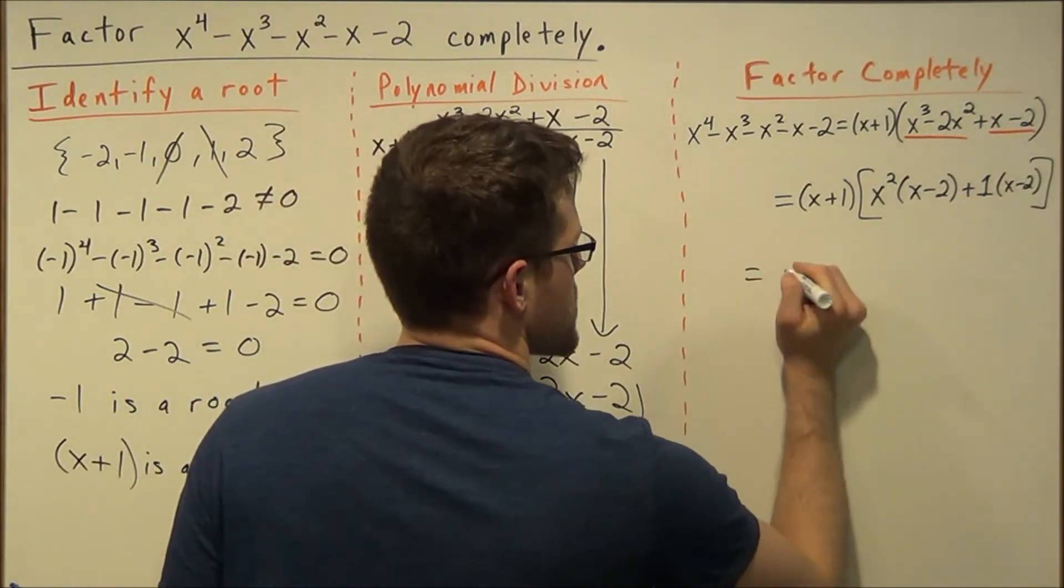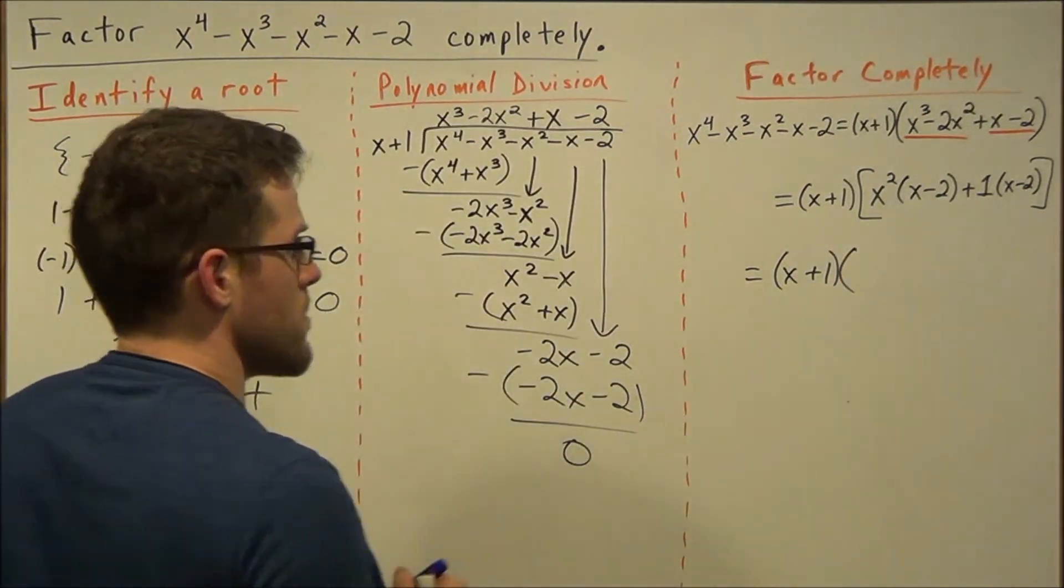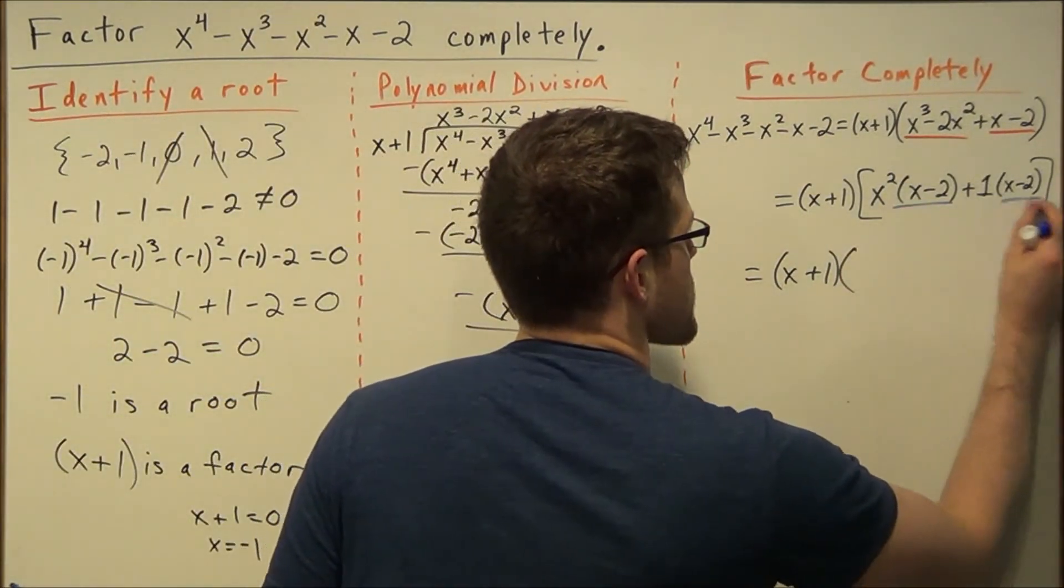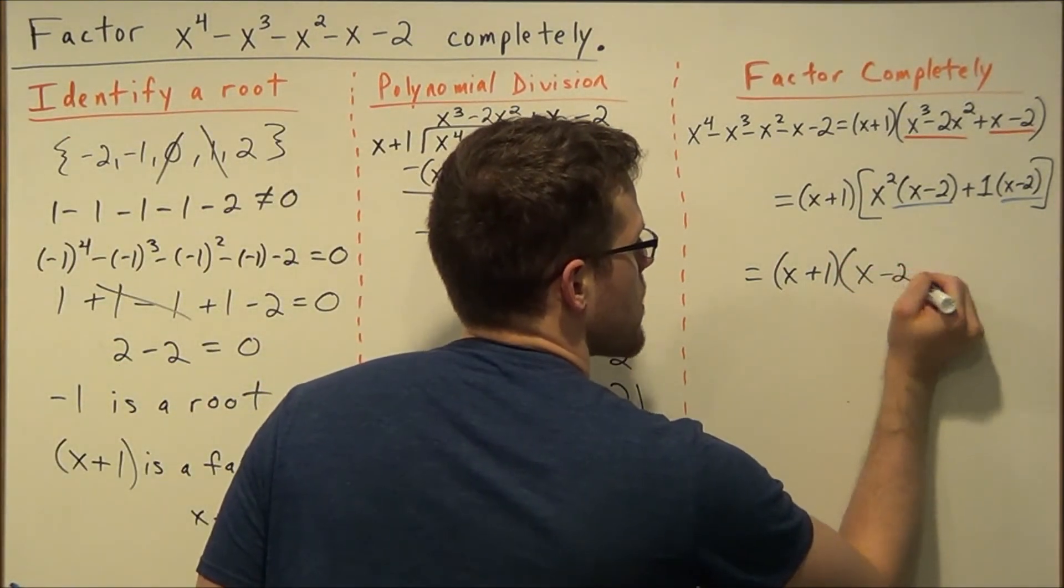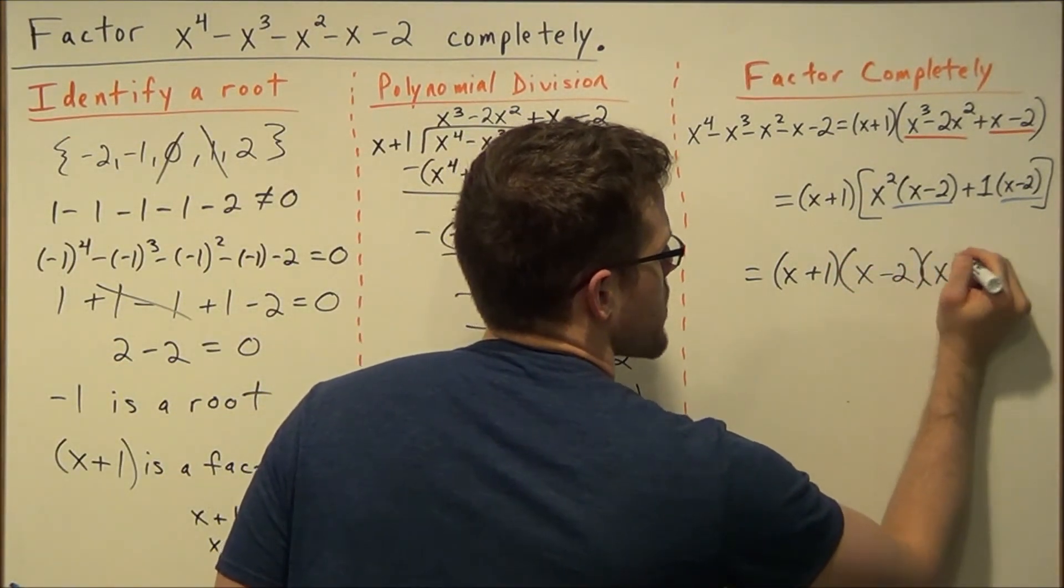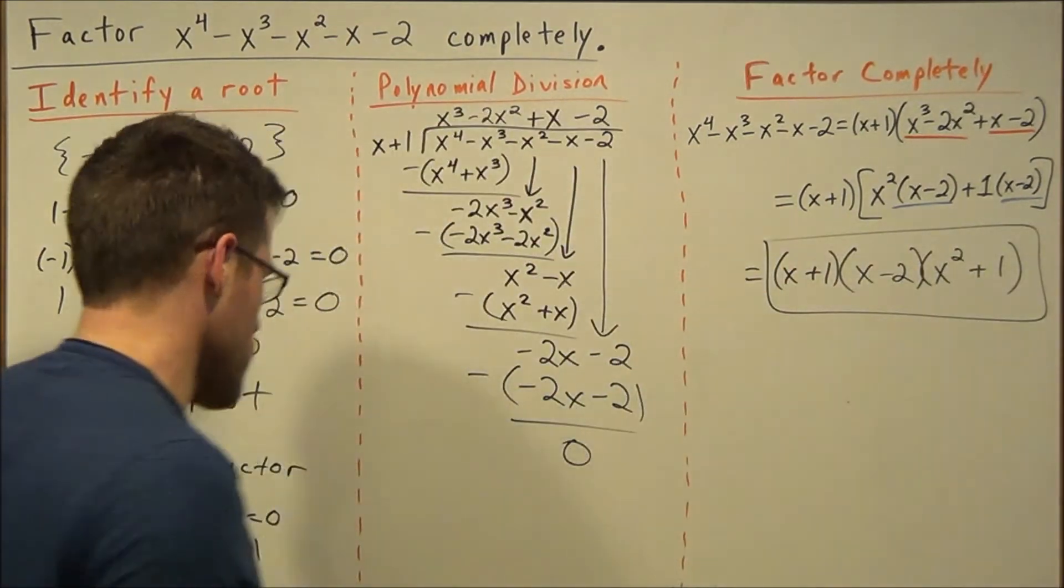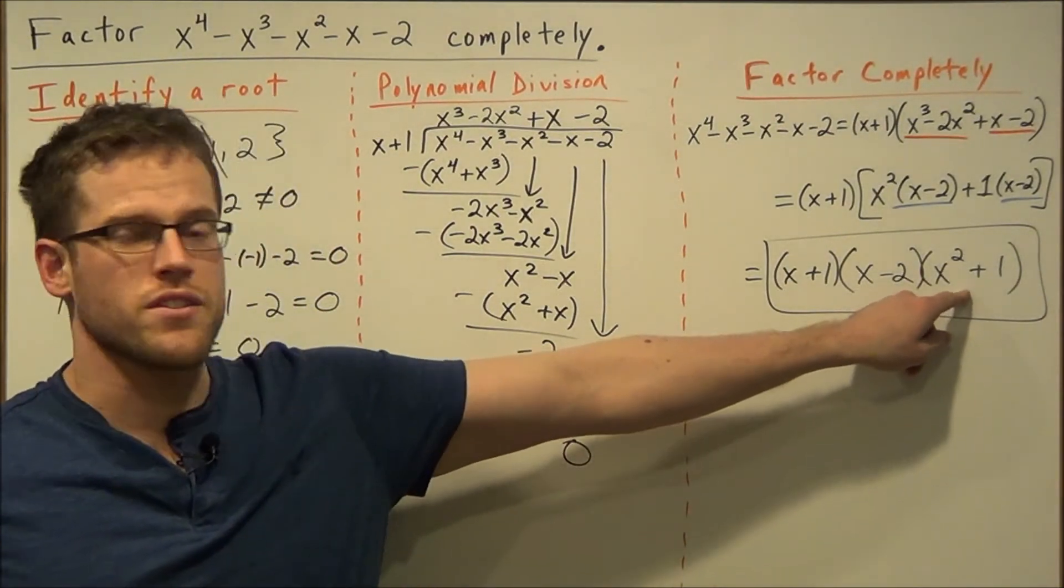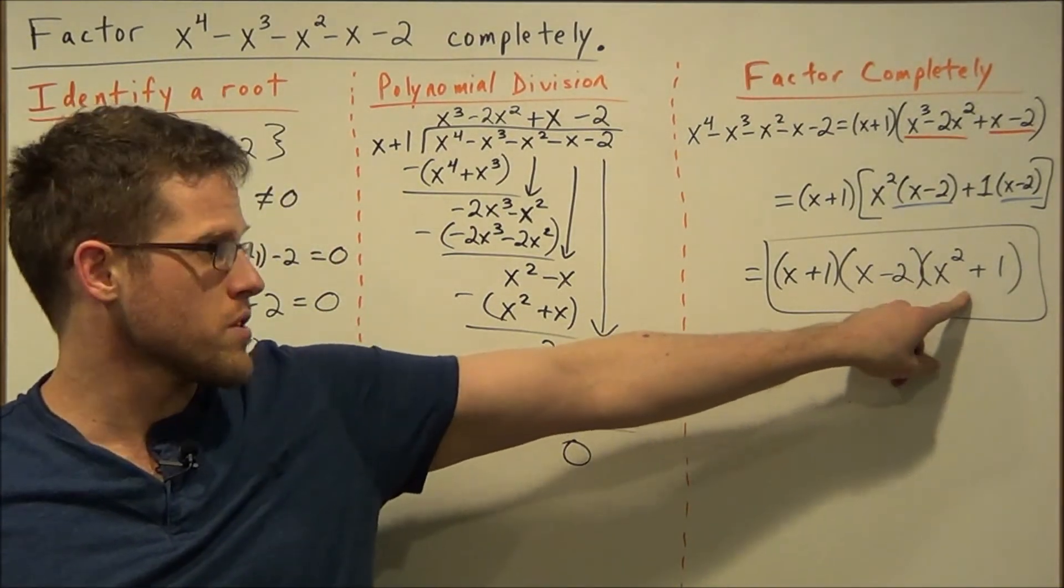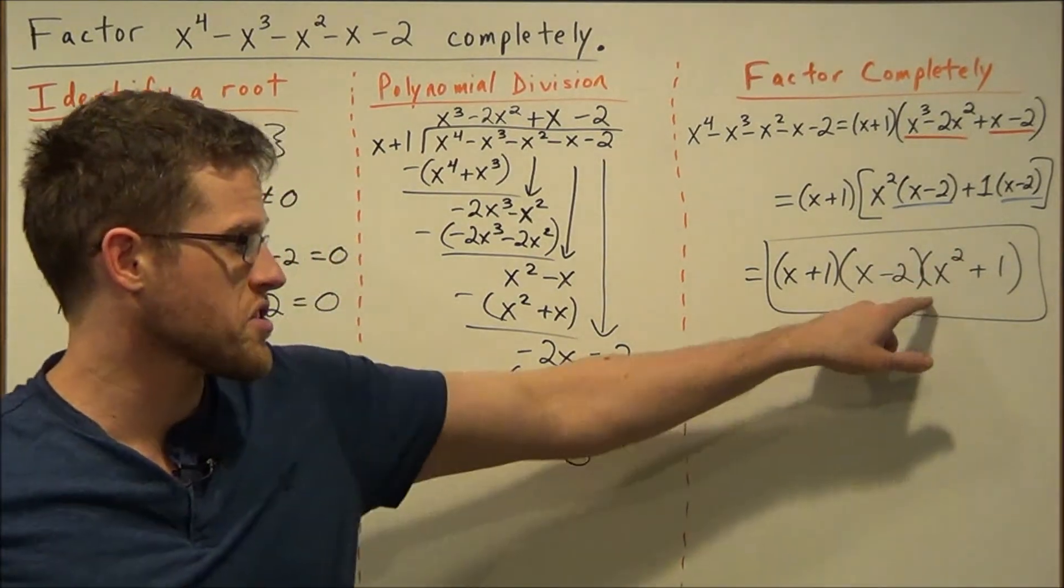And now to close this out completely, we have x plus 1 times, and the matching factor here is x minus 2, so we're going to factor out x minus 2, and we're left with x squared plus 1, which is our final answer. The only way you would get a different answer here: do not fall trap to trying to factor x squared plus 1. The roots of this factor, if we were finding roots, are imaginary, so this is where we stop.